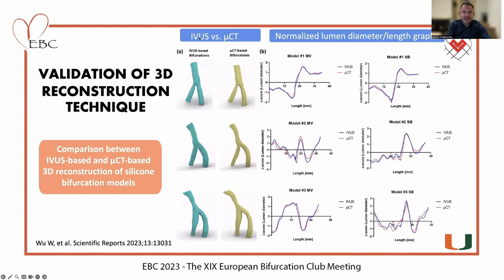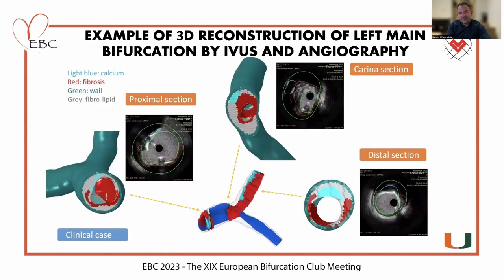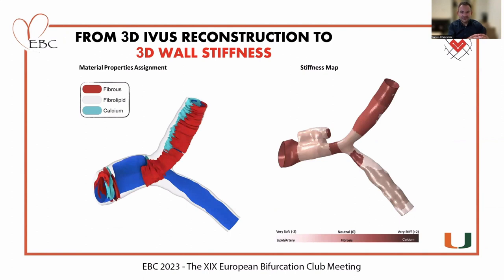For actual validation, we used silicon models with IVUS-based 3D reconstruction against micro-CT imaging as reference, with quantitative results showing very good performance. We then translated the 3D reconstruction and segmented IVUS images to 3D wall stiffness — from the distribution of material to wall stiffness — which is what matters most to inform the proceduralist on where the tissue is stiffer and where more aggressive pre-dilation techniques may be needed.